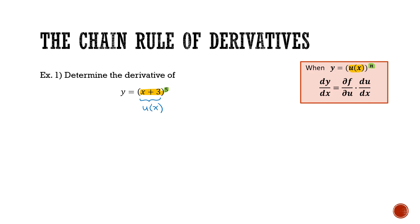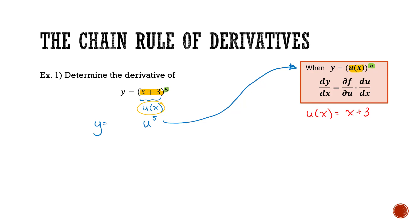To begin the process of doing this derivative, first I'm going to identify what my u(x) is. In this case, that function of x is equal to x plus 3. We can then say y is equal to u to the power of 5 — we just substituted wherever we saw x plus 3 with u. We can go a step further and write y as a function of u instead of a function of x. This doesn't deny that it's a function of x, because u is a function of x.